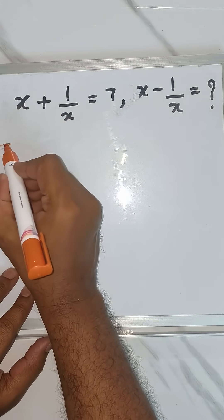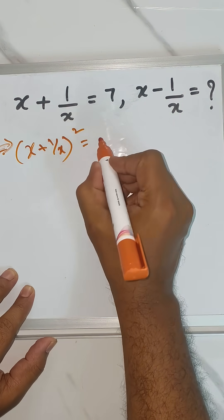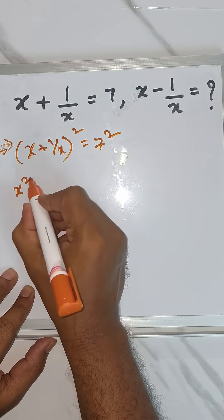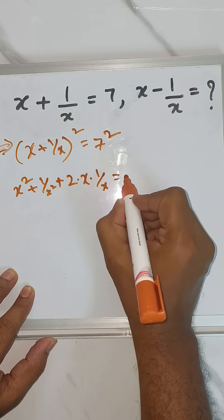So first let's square it on both sides. So x plus 1/x whole square will become 7 square. So x square plus 1/x square plus 2ab, which is 2 into x into 1/x, equals 49.